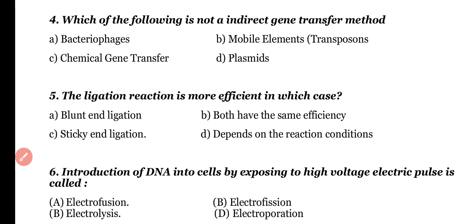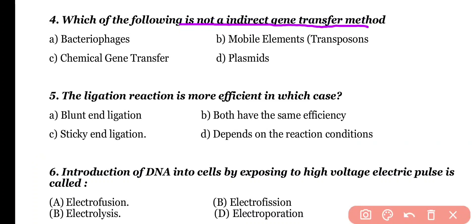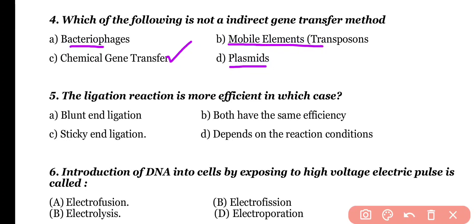Question 4. Which of the following is not an indirect gene transfer method? Bacteriophage, mobile transposons/elements, chemical gene transfer, or plasmids. Correct answer is option C. Chemical gene transfer is not an indirect method; bacteriophage, mobile elements (transposons), and plasmids are indirect gene transfer methods.